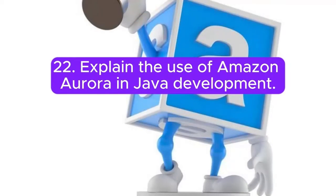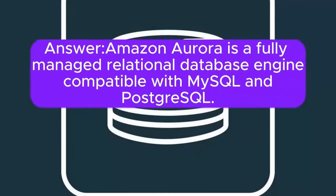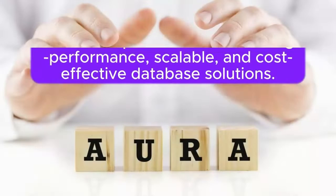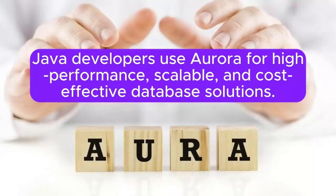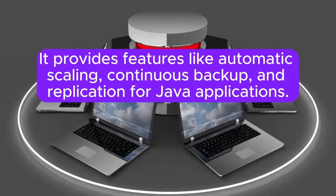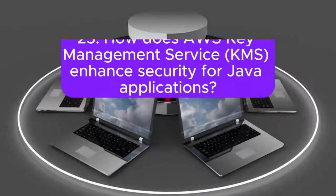Question 22: Explain the use of Amazon Aurora in Java development. Amazon Aurora is a fully managed relational database engine compatible with MySQL and PostgreSQL. Java developers use Aurora for high-performance, scalable, and cost-effective database solutions. It provides features like automatic scaling, continuous backup, and replication for Java applications.